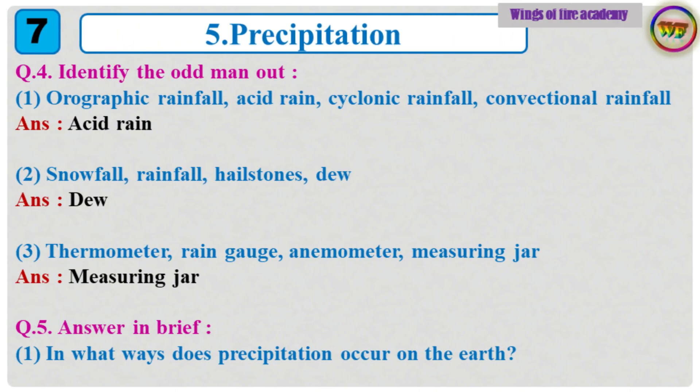Question 4: Identify the odd man out. 1. Orographic rainfall, acid rain, cyclonic rainfall, convectional rainfall. Answer: Acid rain. 2. Snowfall, rainfall, hailstones, dew. Answer: Dew. 3. Thermometer, rain gauge, anemometer, measuring jar. Answer: Measuring jar.